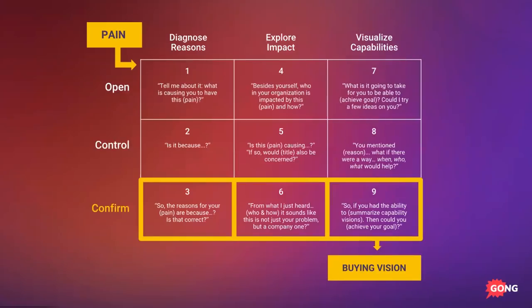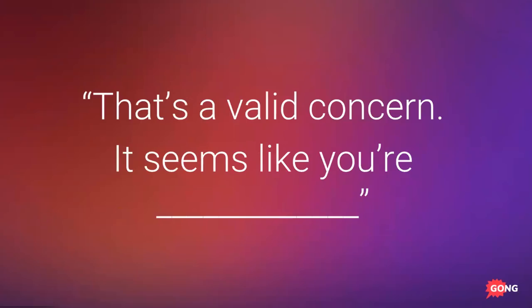As a quick side note, ensuring that your buyer feels understood is so important to sales success that the Solution Selling nine-block discovery methodology dedicates three out of its nine types of discovery questions to what the author calls summarizing confirmation questions — another way of making sure your buyer feels understood. If you get this principle right, for many of your buyers it might be the first time in their lives they felt truly understood by another human being.